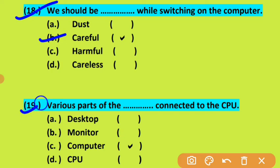Nineteenth is: various parts of dash are connected to the CPU. Iski kis cheez ke bahut saare parts CPU se connected hote hain? And your options are: desktop, monitor, computer, aur CPU. So option C is correct — various parts of computer are connected to the CPU. Jo computer ke bahut saare parts hain, wo aapke CPU se connected hote hain.